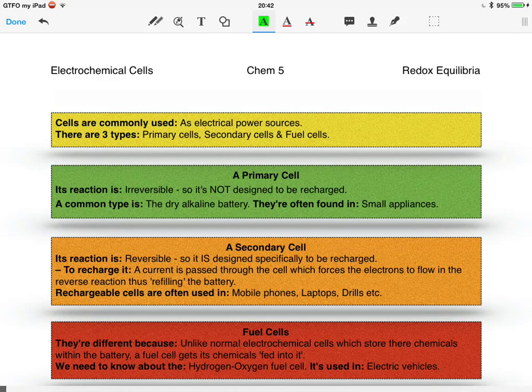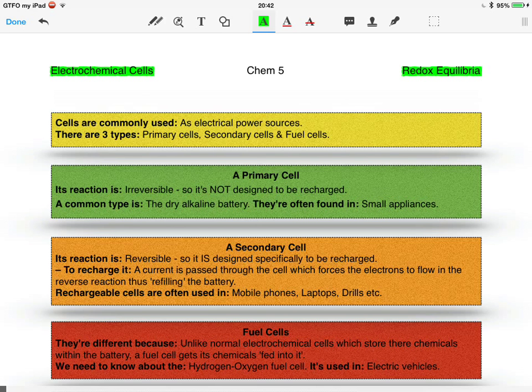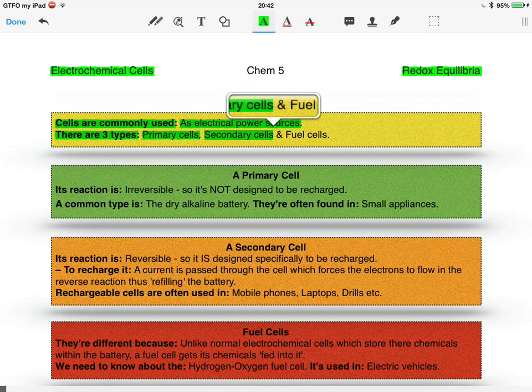The final part of the redox equilibria is the electrochemical cells. Cells are commonly used as electrical power sources. There are three types: primary cells, secondary cells, and fuel cells.